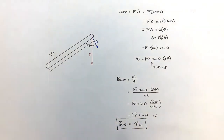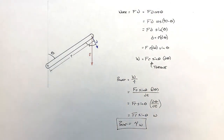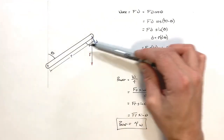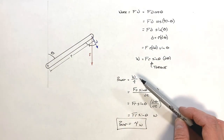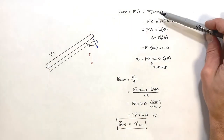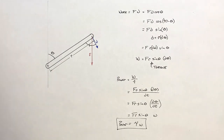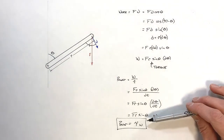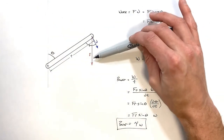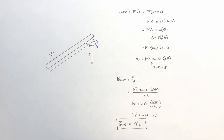Even when we include the angles properly, we find they work out so that the result is still torque times omega. So it wasn't an incorrect approximation before — the math was just simpler. That's how we properly derive the equation for power produced by a torque on a rotating object: P = τω.